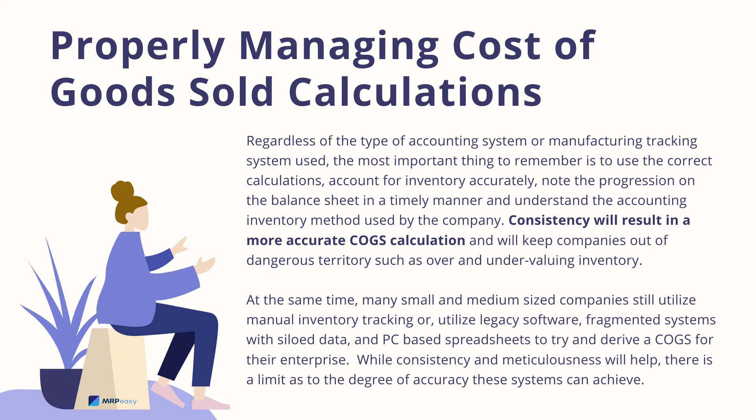Regardless of the type of accounting system or manufacturing tracking system used, the most important things to remember are to use the correct calculations, account for inventory accurately, note the progression on the balance sheet in a timely manner, and understand the accounting inventory method used by the company. Consistency will result in a more accurate COGS calculation and will keep companies out of dangerous territory such as over and undervaluing inventory.